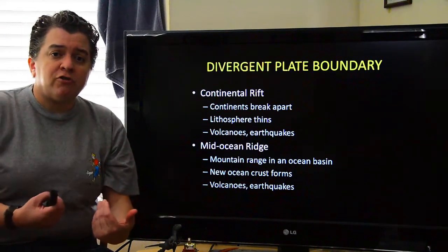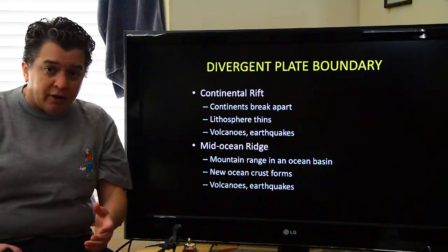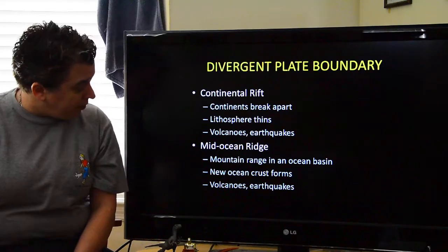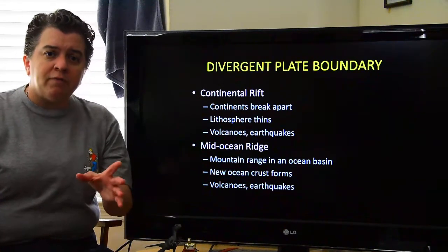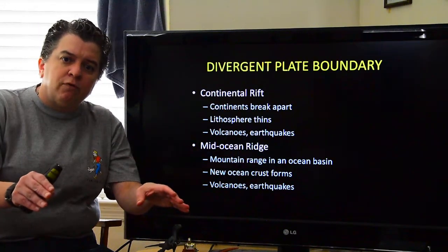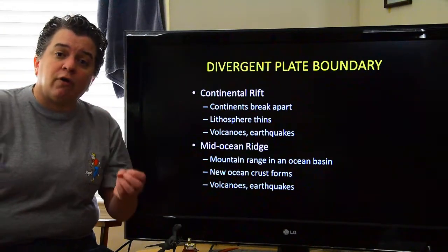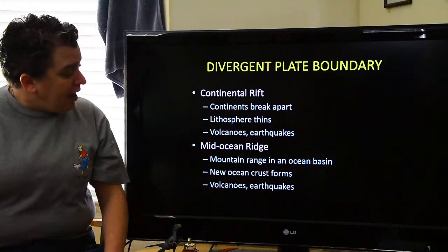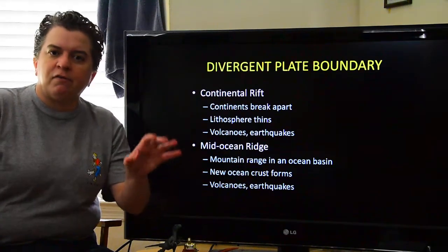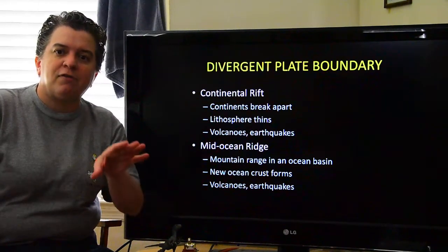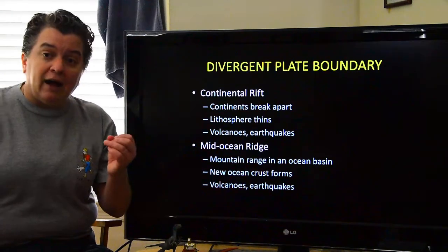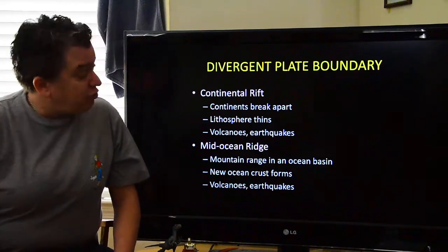In addition to having a divergent plate boundary on a continent, you can have one under the oceans, and this is a mid-ocean ridge. This is a mountain range that's in all of the ocean basins. As the plates move away from each other, new ocean crust forms there. You have volcanoes and earthquakes occurring there — you don't really hear much about it because it's several kilometers beneath sea level, so it doesn't really affect people. But you do have that active plate boundary down there in all the ocean basins.